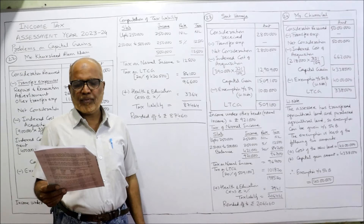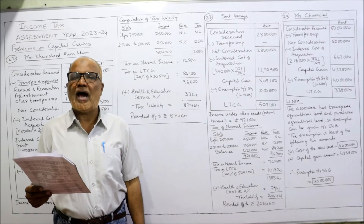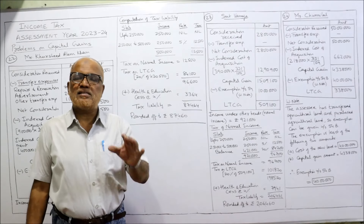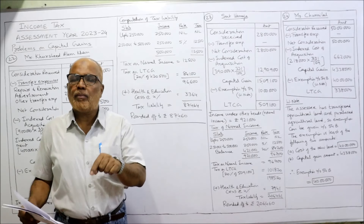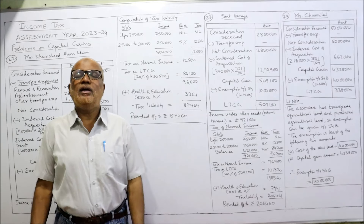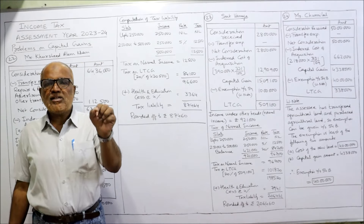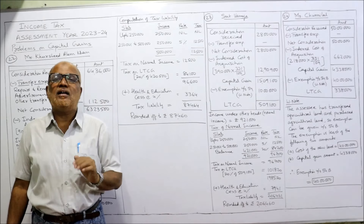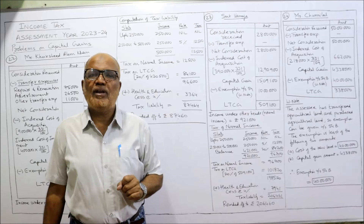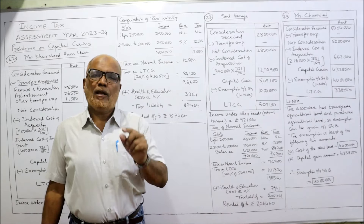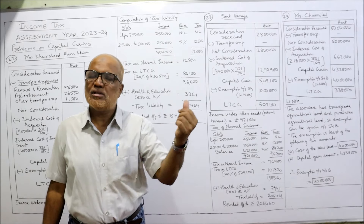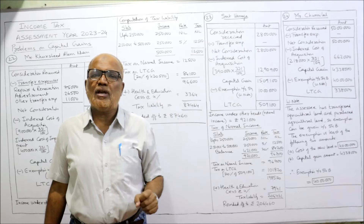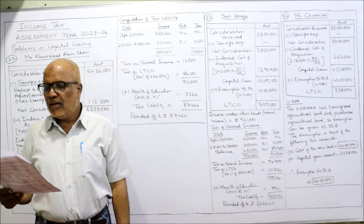Now problem 24. Mr. Chunni Law of Wither Town sold his 10 acres of agricultural land at Rs. 5,00,000 per acre. In previous problems the assessee sold a residential house, but here the assessee sold agricultural land. The Income Tax Act provides that if an assessee sells agricultural land and within the stipulated period purchases another agricultural land, exemption is given under section 54B — just as section 54 applies to residential houses, section 54B applies to agricultural land.